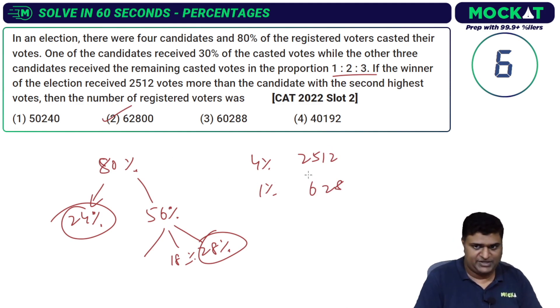Once again, just to slowly look at this: of the total number of registered voters, 80 percent are casting their votes. 30 percent of the casted votes - 30 percent of this 80 percent - comes to 24 percent that's gotten by one of the candidates. The other three receive the remaining casted votes, which is 56 percent.